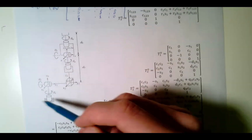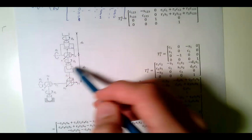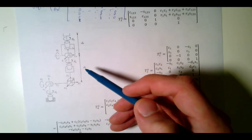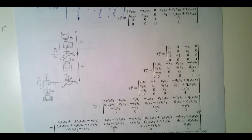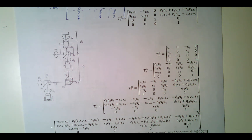Let's do a slightly more interesting example. This is the famous Stanford manipulator — it's got revolute, revolute, prismatic, revolute, revolute, revolute joints. At the end we have the spherical wrist. When you're given something complicated like this, we need to build it out and figure out which quantities we're going to need by following our rules for the Jacobian.